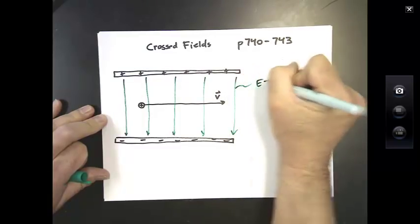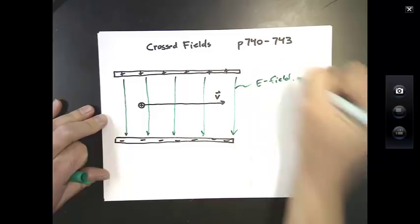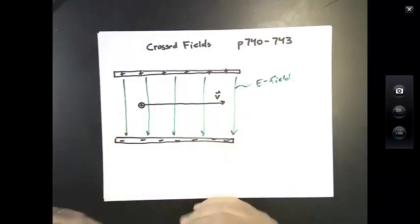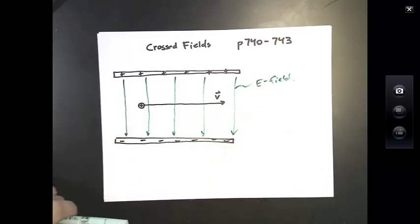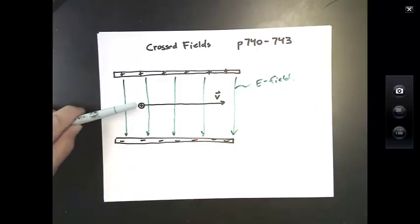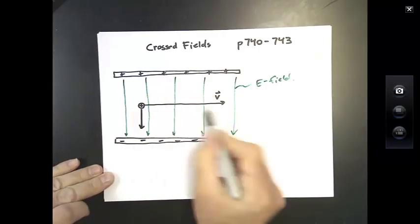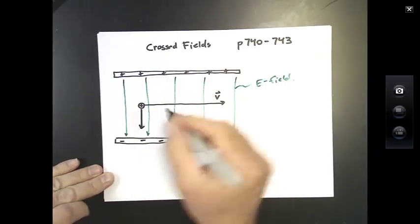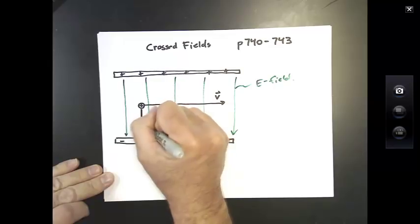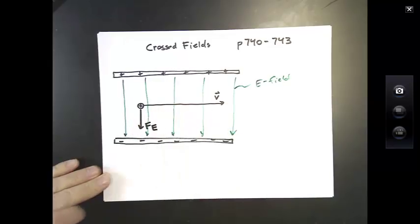If there's an E field downward, and this is a positive charge, the direction of the force, the electric force on that positive charge, whether it's moving or not, is downward. It's very simple. So we have a force in this direction. Remember, this arrow represents velocity. That is not a force. And that's due to the E field.